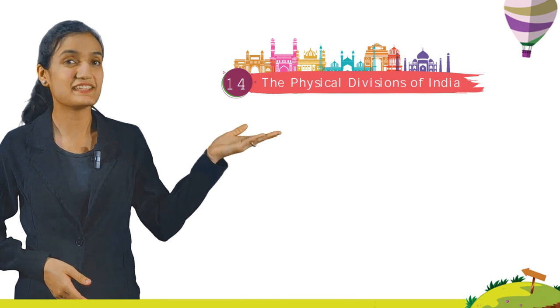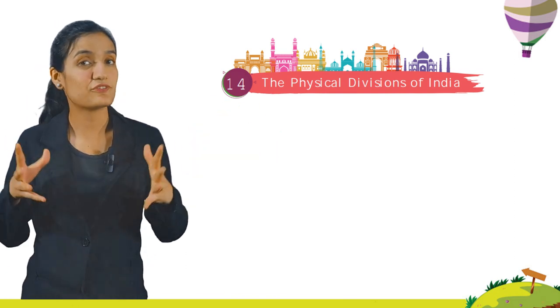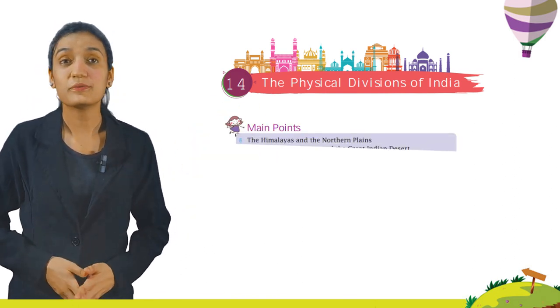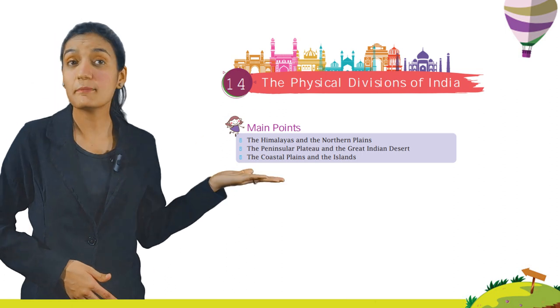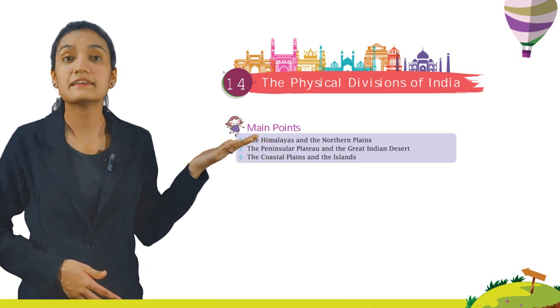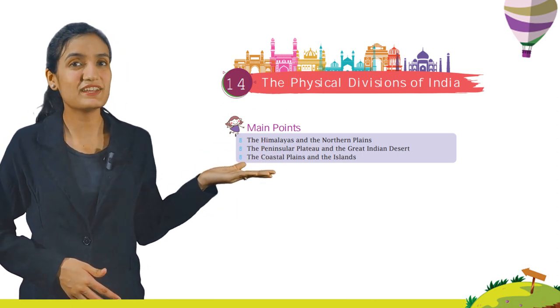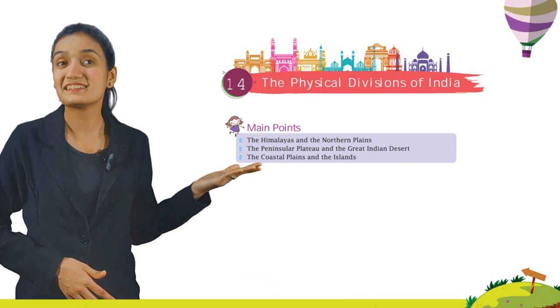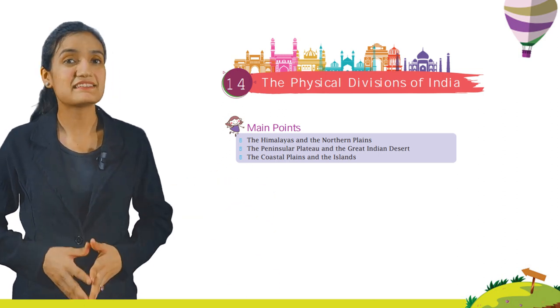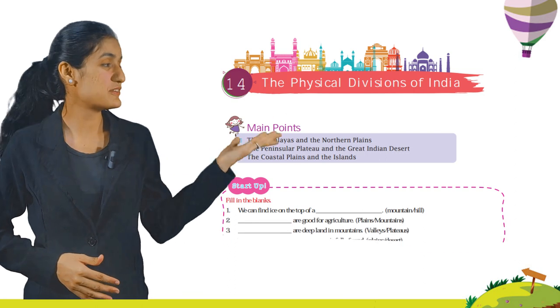Hello Class 4 students. I hope you are all doing well. Today we are going to start with Chapter 14, that is the Physical Divisions of India. The main points are the Himalayas and the Northern Plains, the Peninsular Plateau and the Great Indian Desert, the Coastal Plains and the Islands. So class, let's start.